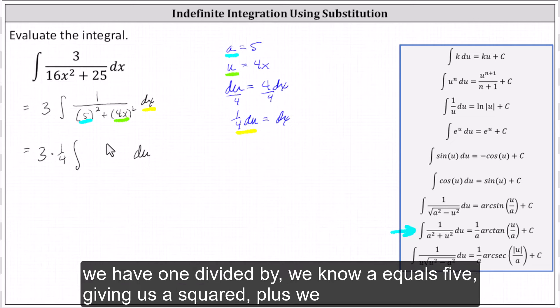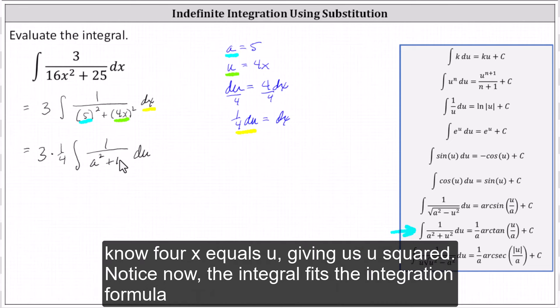And then we have one divided by, we know a equals five, giving us a squared, plus we know four x equals u, giving us u squared.